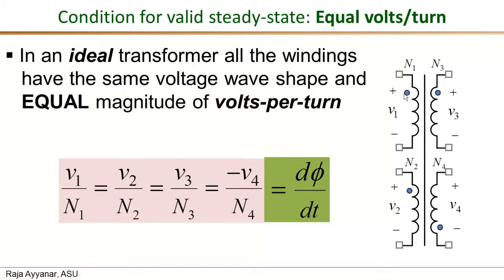The bottom line is that the volts per turn is the same in all the windings, and that equals d phi over dt. By Faraday's law, the voltage in any winding Vi equals ni times d phi over dt. Since the flux is the same for all the windings, d phi over dt is the same, and multiplying by ni gives the total voltage. Therefore, Vi over ni equals d phi over dt for every winding.